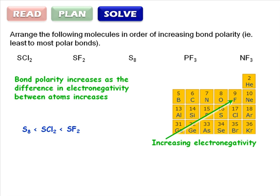And nitrogen is closer than phosphorus, so the last two will be NF3 followed by PF3.